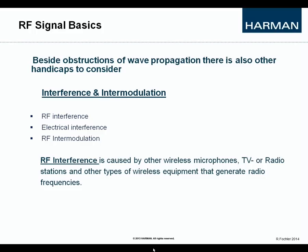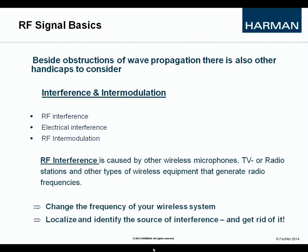In real life, of course, there will always be differences between the two radio channels in terms of emitted radio power and field strength, so that the stronger signal would overrule the weaker one. And if you face RF interference, what could you do? The easiest solution is to change the frequency of your wireless system, localize and identify the source of interference, and get rid of it.